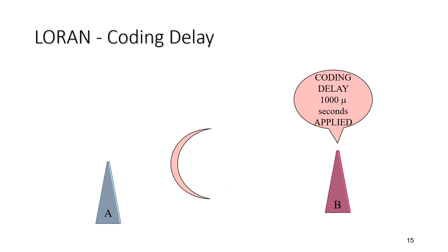The diagram shows how, with a coding delay of 1000 microseconds, the slave station waits for the master to finish its transmission before starting its own. This is where the coding delay is introduced, and it helps in obtaining a better line of position without any ambiguity.